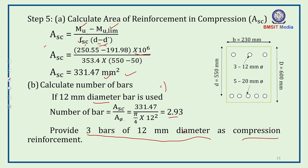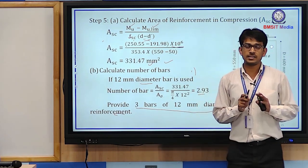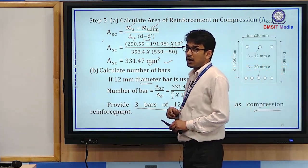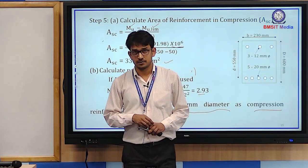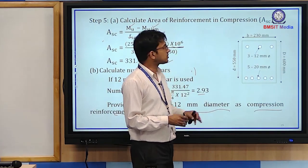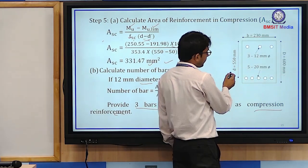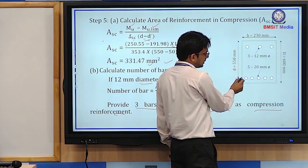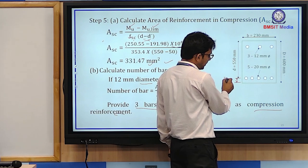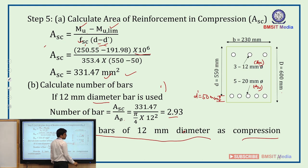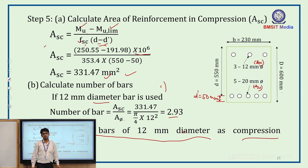Provide 3 bars of 12 mm diameter as compression reinforcement. Finally, draw the cross-sectional diagram: 230 mm wide, 600 mm overall depth, effective depth 550 mm (cover 50 mm), 5 bars of 20 mm diameter as Ast at tension side, and 3 bars of 12 mm diameter as Asc at the compression side. This completes the design of the doubly reinforced beam.